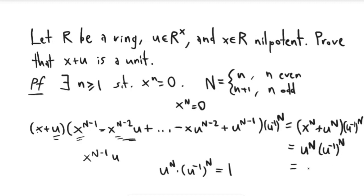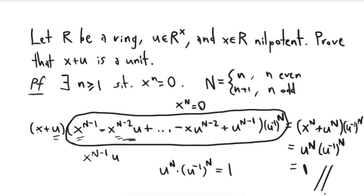Because I have u to the n, u inverse to the n. And so what that means is that this entire expression here is an inverse for x plus u. And that proves that x plus u is a unit. And so we are done.